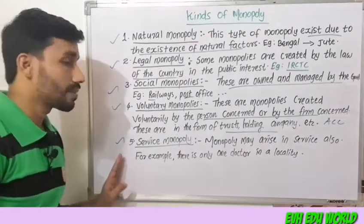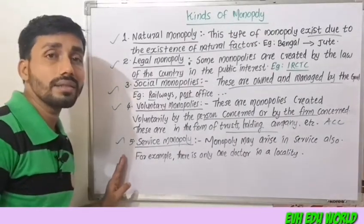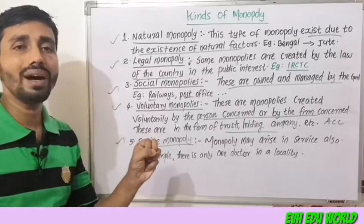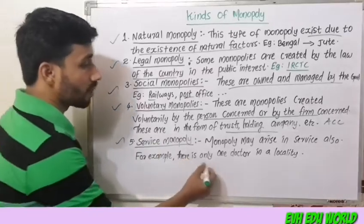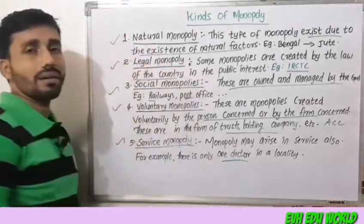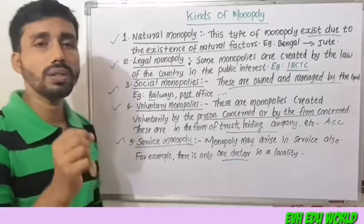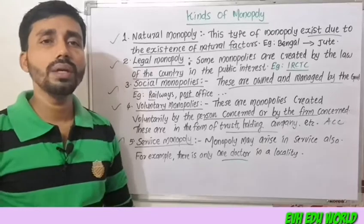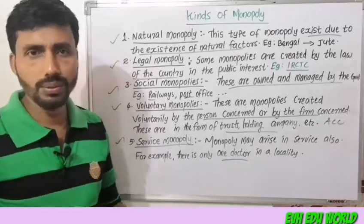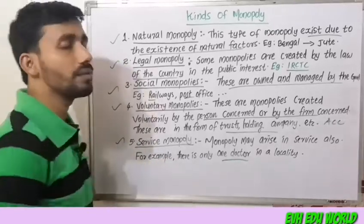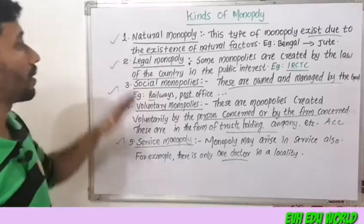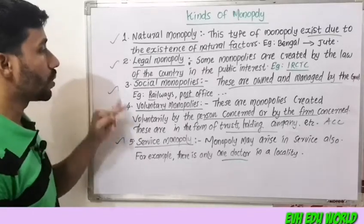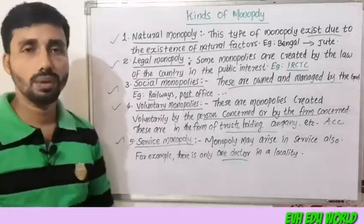The fifth kind is service monopoly. Monopoly may arise in services also. For example, if there is only one doctor in a particular locality, that doctor holds a service monopoly. These are the kinds of monopoly: natural, legal, social, voluntary, and service monopoly.